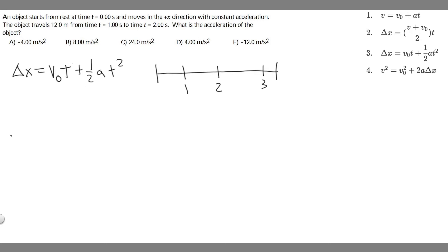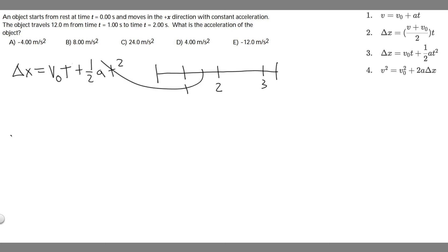When we plug in t equals 2, it gives us the total distance traveled up to that point. What the problem gives us is the distance traveled between t equals 1 and t equals 2. So if we plug in t equals 2 to get the whole distance, then subtract the result from t equals 1, we get just that interval — which we know is 12 meters. That lets us solve for a.